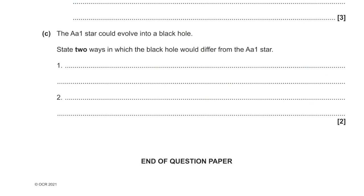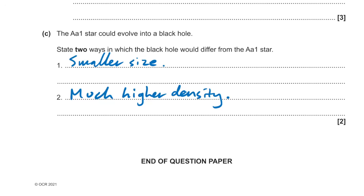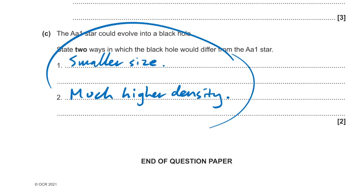State two ways a black hole would differ from star AA1: it would be much smaller in size, and it would have a much higher density. That covers the paper — hope you found it helpful. If you did, please leave a like, and consider hitting the super thanks button. Click on the card to see all other OCR papers in the playlist.